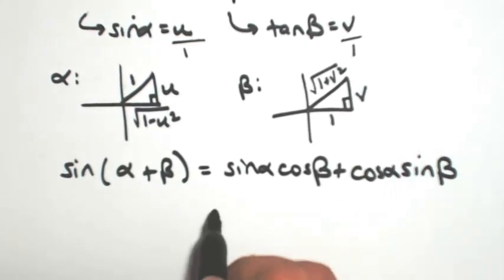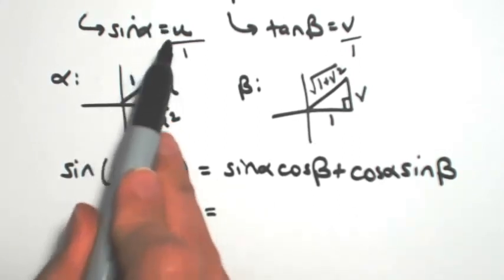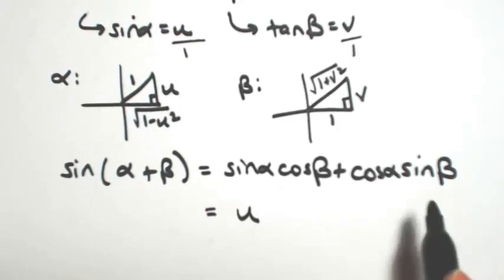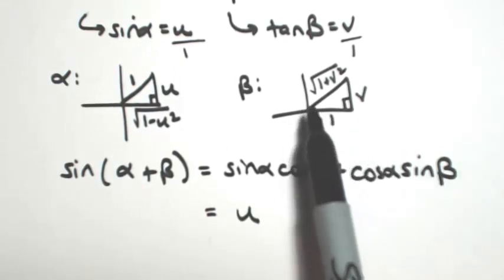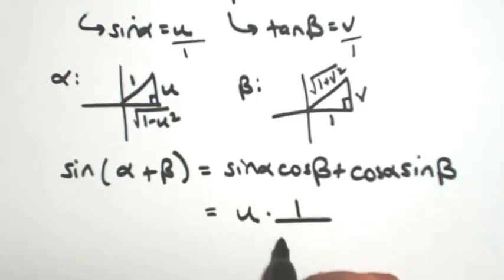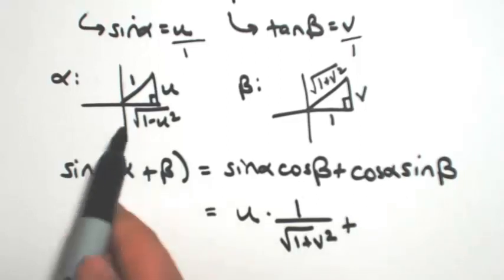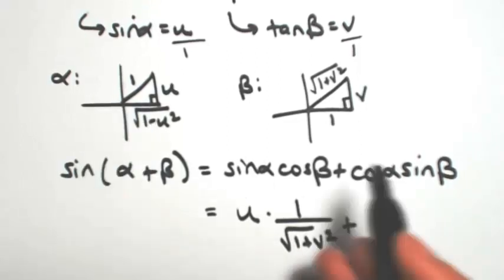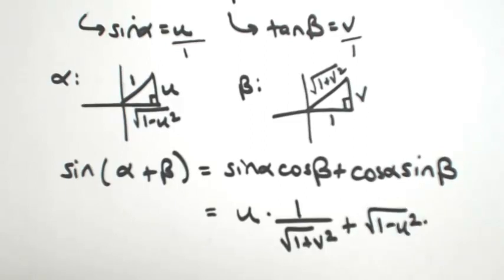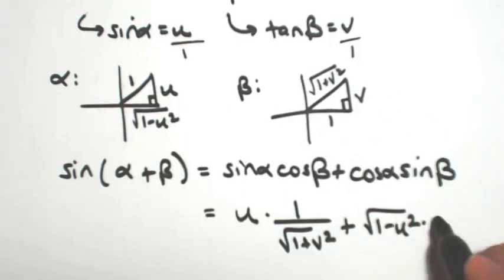From our pictures, we can fill all of this in. The sine of alpha was u over 1. Cosine of beta is going to be 1 over the square root of 1 plus v squared. Cosine of alpha is the square root of 1 minus u squared over 1. And sine of beta, opposite over hypotenuse, is v over the square root of 1 plus v squared.